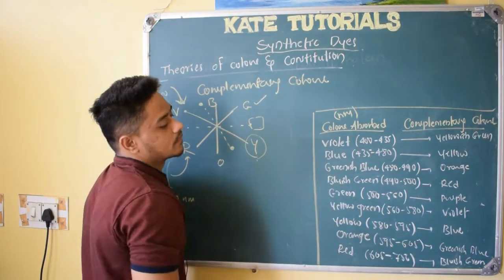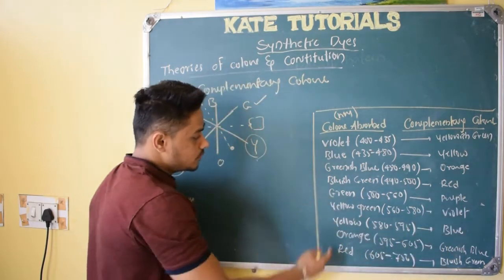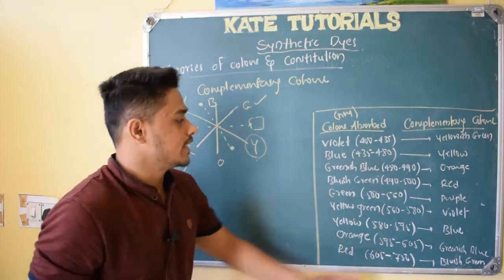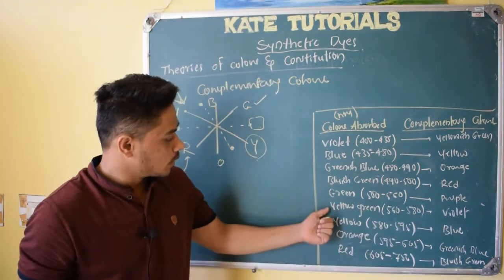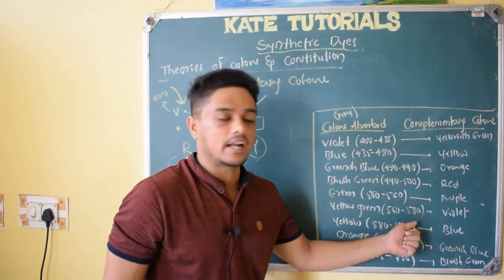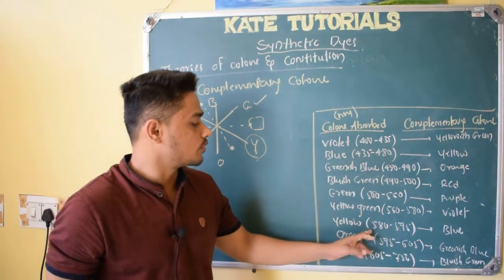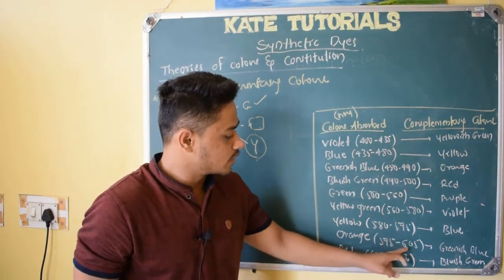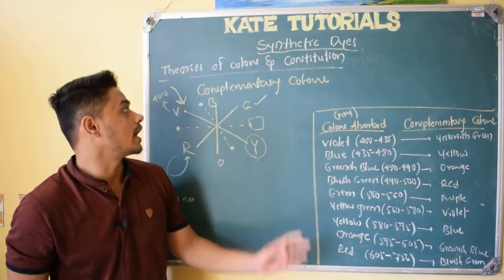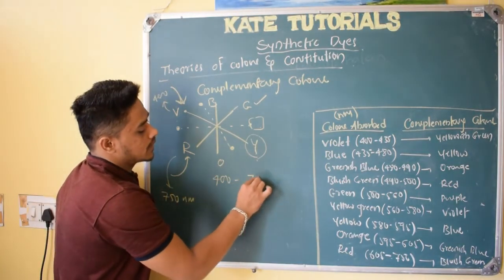Bluish green, 490 to 500 nanometer, it appears red. If a substance absorbs green, 500 to 560 nanometer, it appears purple. If it absorbs yellowish green, 560 to 580 nanometer, it appears violet. Then yellow, 580 to 595; orange, 595 to 695; and red, 695 to 750 nanometer. Because I told, I have taken only from 400 to 750 nanometer.